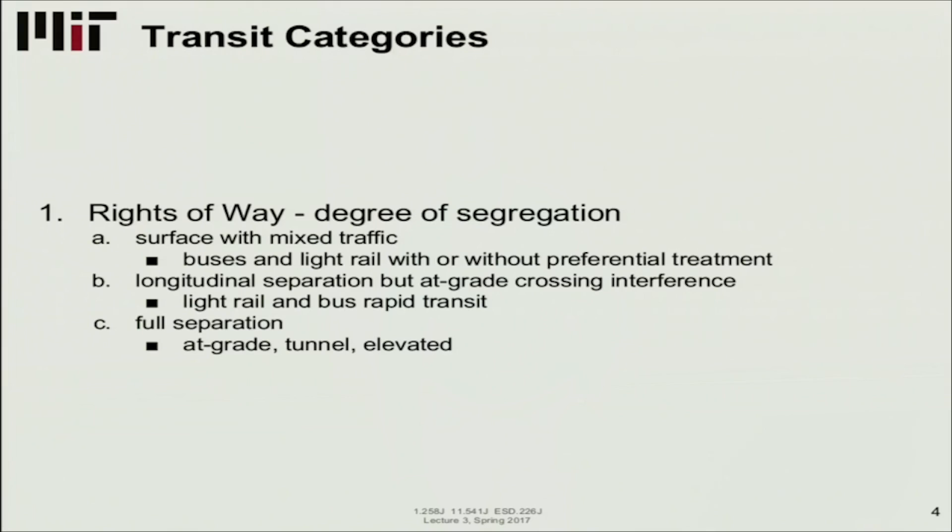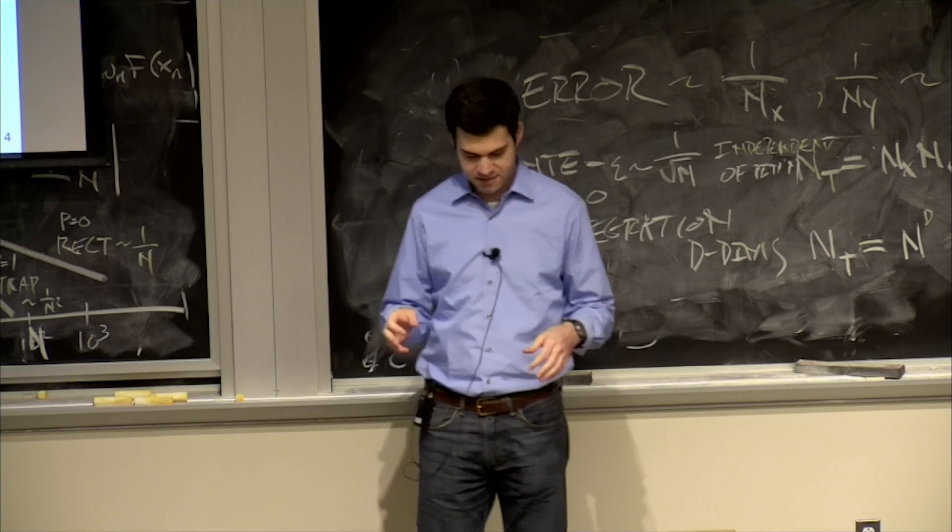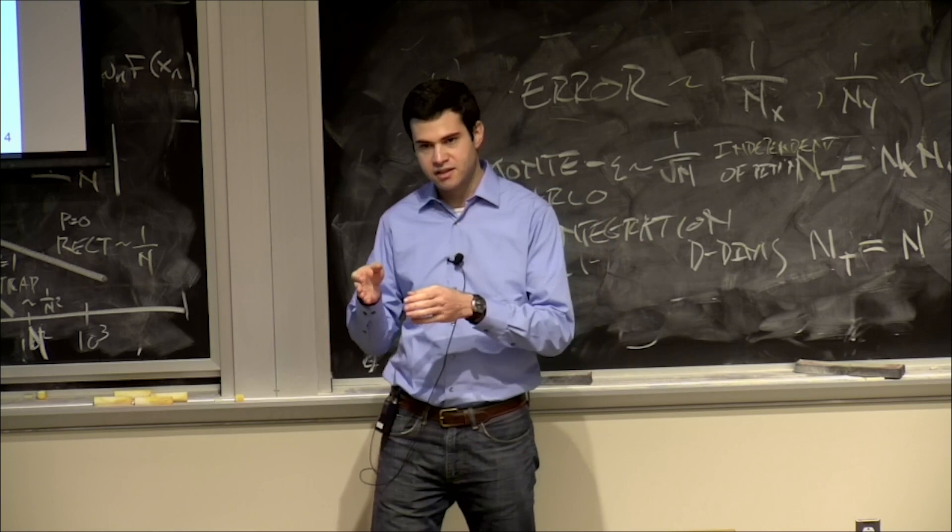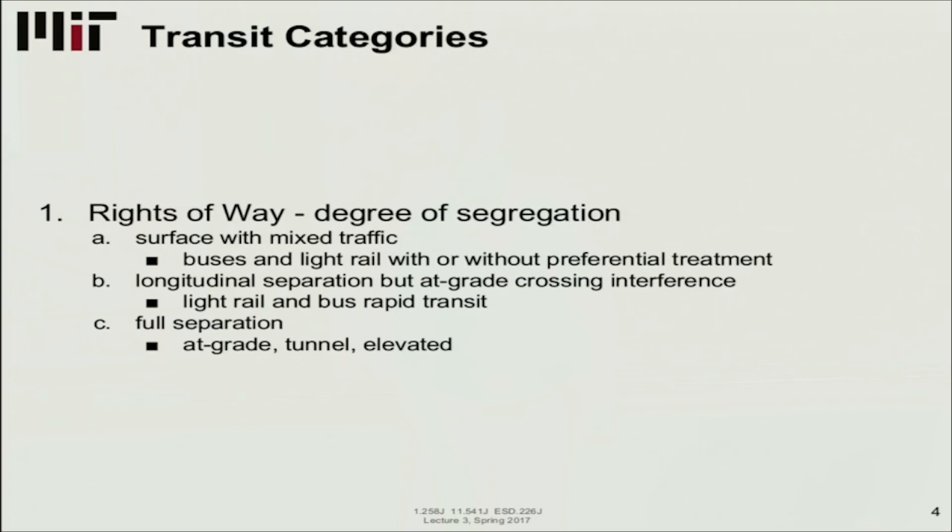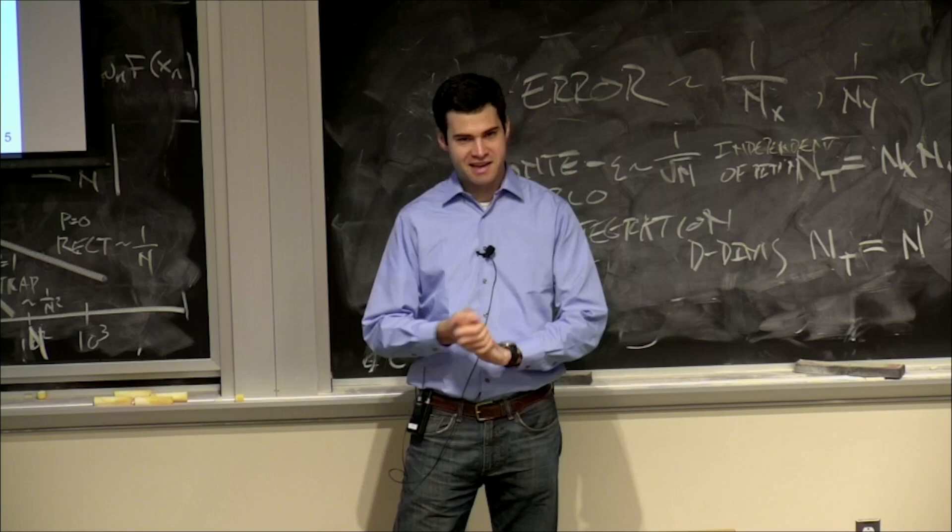All right. Other categories. Let's talk about rights-of-way. We started talking about that, the segregation. We can think about three different levels. Surface with mixed traffic, typical for buses or light rail. That's no preferential treatment. Then we go to longitudinal separation with at-grade crossing. The green line here in Boston is mostly like that. They run on their own track. When they hit an intersection, they have to wait for the red light with other cars. Some sections are actually surface with mixed traffic, like the last end of the E line. And then full separation, right? That could be at-grade, tunnel, or elevated.